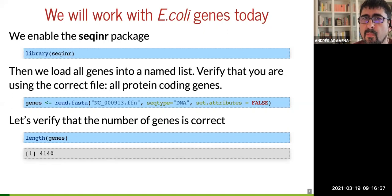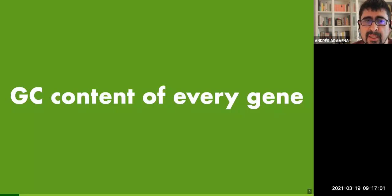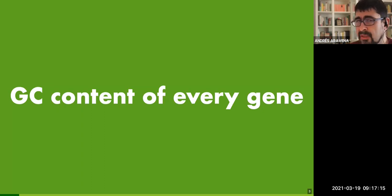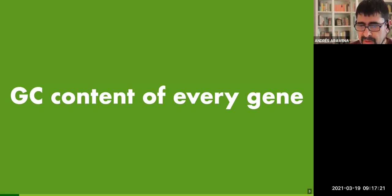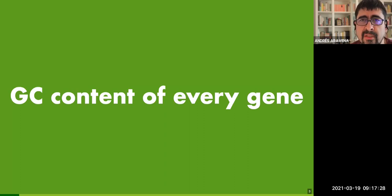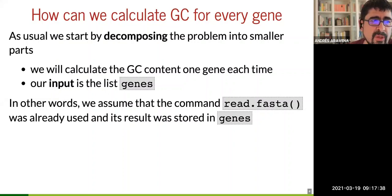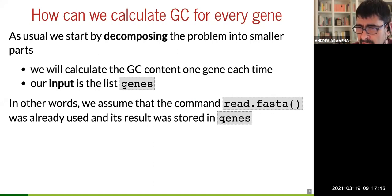If you watched class three before this class, you know we can calculate the GC content of one gene — the first gene. Now we are going to make it more general. We apply the logic of composition: calculate the GC content of every gene, one by one — first, then second, then third. We assume we have the genes in a list called 'genes' and we use read.fasta.